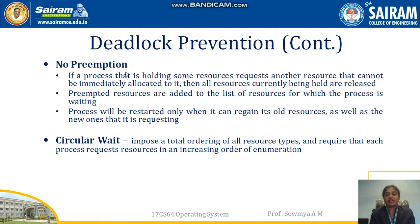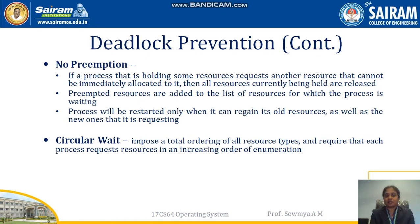For no preemption: if a process is holding one resource and waiting for another resource, instead of doing that, apply a no-preemption condition. If a process is holding some resource and requests another resource that cannot be immediately allocated, then all resources currently being held are released. Once it releases the held resources, another process may complete its execution, and meanwhile the requesting process can also be released by some other process — thus deadlock can be prevented.